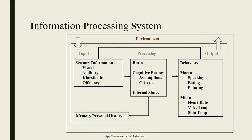This is a processing system showing how it works. We have an environment with sensory input information being taken. The brain receives it along with memory and personal history. Behaviors include speaking, eating, pointing, heart rate, voice temperature, and skin temperature. This is a general information processing system illustrating how a human brain works.